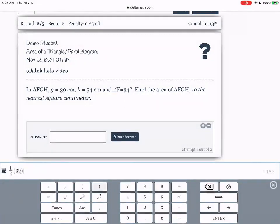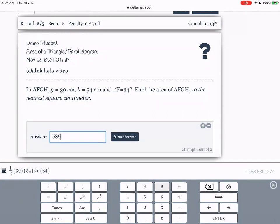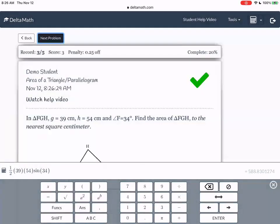Okay. So we have one half, 39, 54, times sine of 34. And that gives us 588.8. So we're going to round that to the nearest square centimeter. As the instructions say. And say 589. So any questions on that one? Okay. Submitting answer. And then let's do the next section.